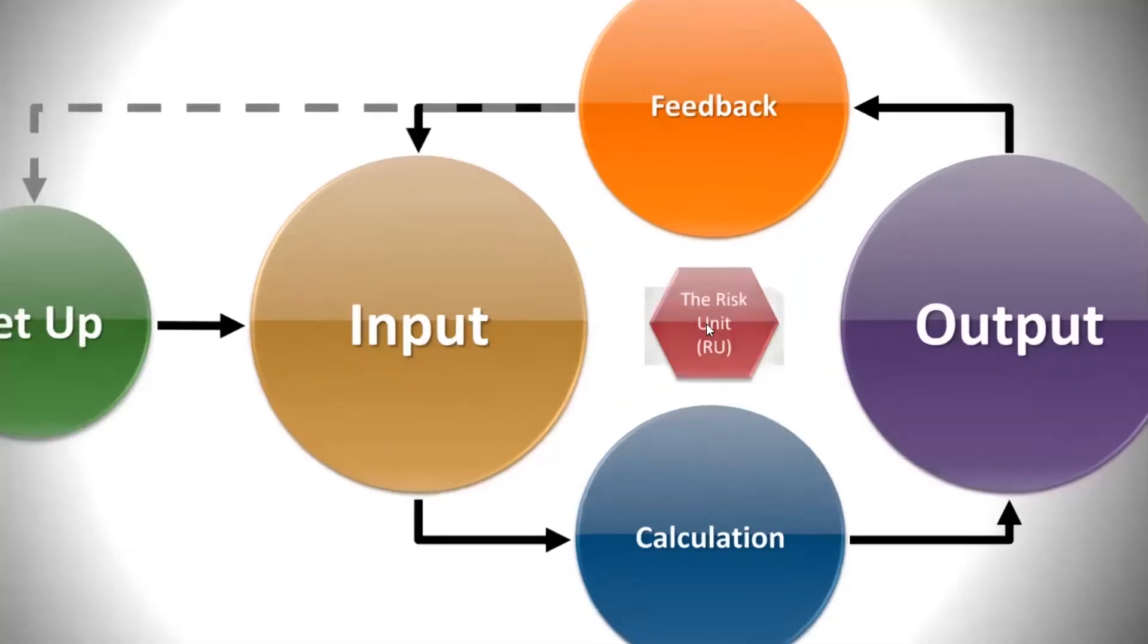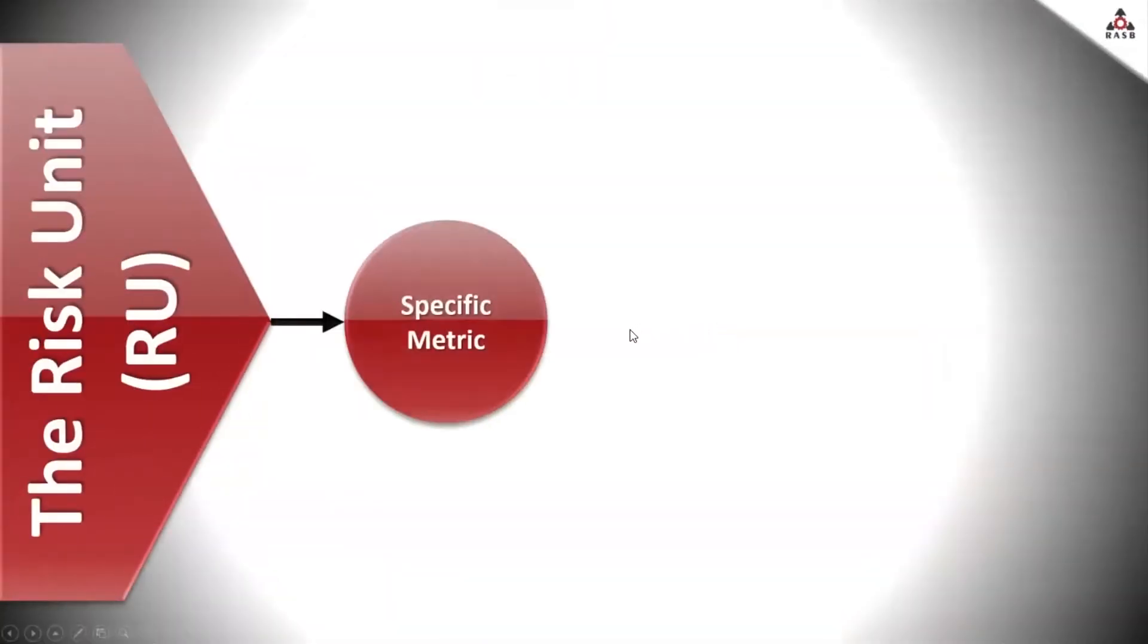The main element, however, or the key element of this approach is the risk unit or RU. You heard us mentioning it as RU several times, maybe yesterday, which is a common additive metric that expresses all forms of non-financial risk.